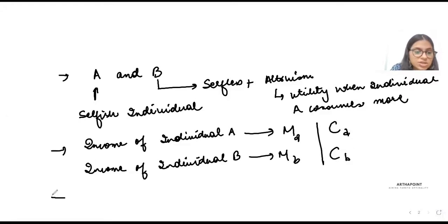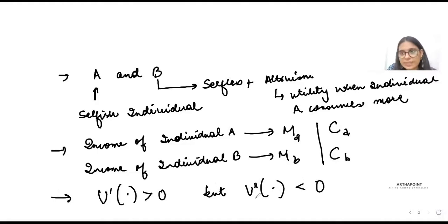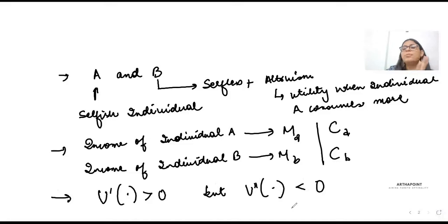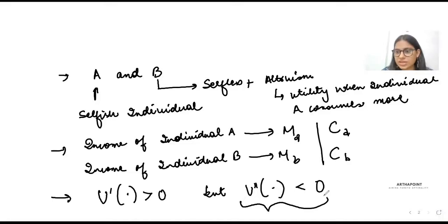We make certain basic assumptions: marginal utility is greater than zero, but we have diminishing marginal utility, so the second derivative of utility is negative. This means that as you consume a commodity, the additional utility you keep getting is positive but keeps declining — from the first to the second unit the utility is high, but from the second to the third the additional utility is positive yet lesser than before.